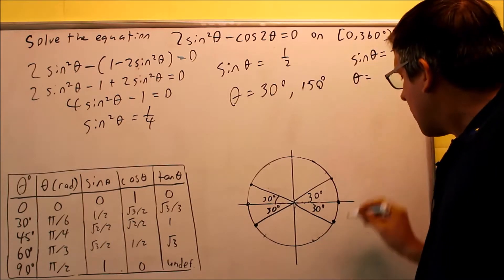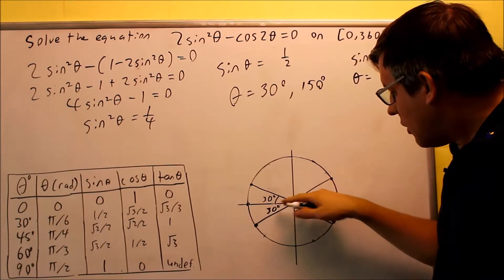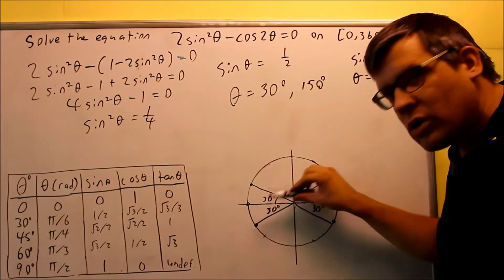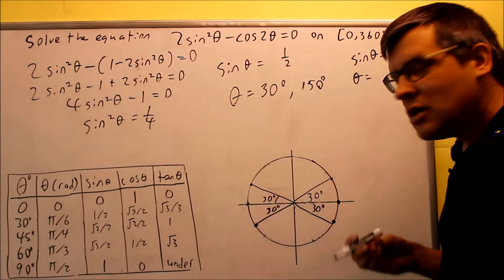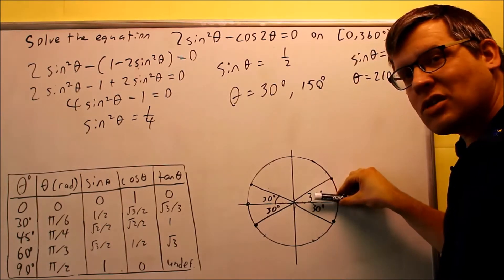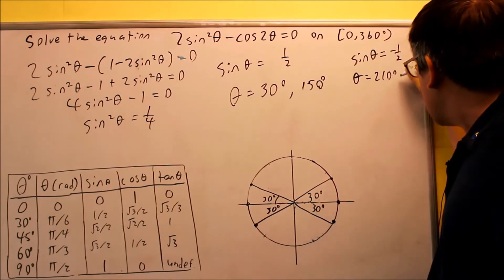To get this angle, that's 180 over to here, but instead of going backwards, we're going to go forwards. You're going to do 180 plus 30, giving 210 degrees there. This one is 360 minus the 30, which is 330.